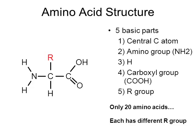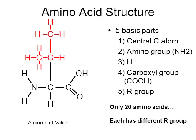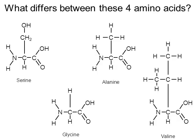Another amino acid, alanine, has an R group consisting of a carbon and three hydrogens, but notice how everything else is the same compared to glycine. There's also an amino acid called valine, whose R group is a little more complex. Notice the rest of the amino acid is unchanged — it still has the NH2 amino group and the COOH carboxyl group. The only thing different between valine, alanine, and glycine is their R group.